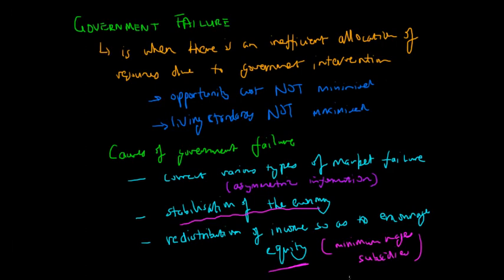And so this is the concept of government failure, where the government intervenes in certain markets, and because of the government intervention, there is an inefficient allocation of resources due to the fact that opportunity cost in these markets is not minimized and that living standards in these markets are not maximized.